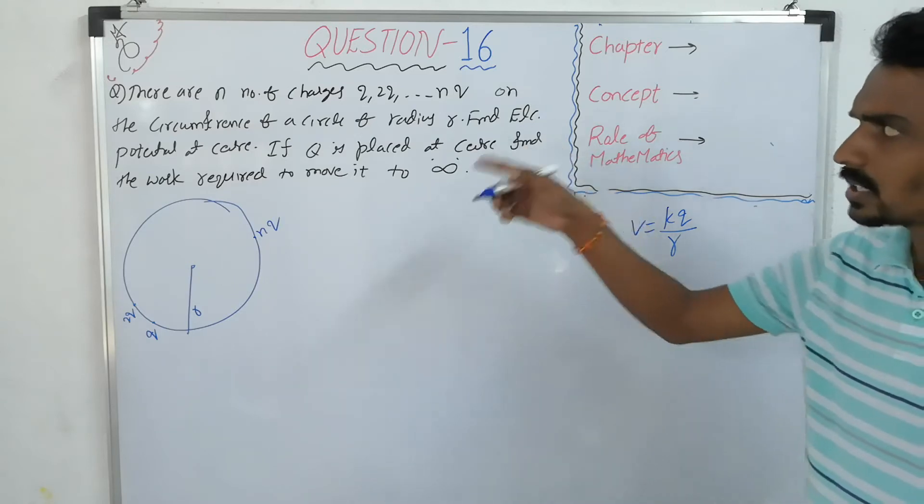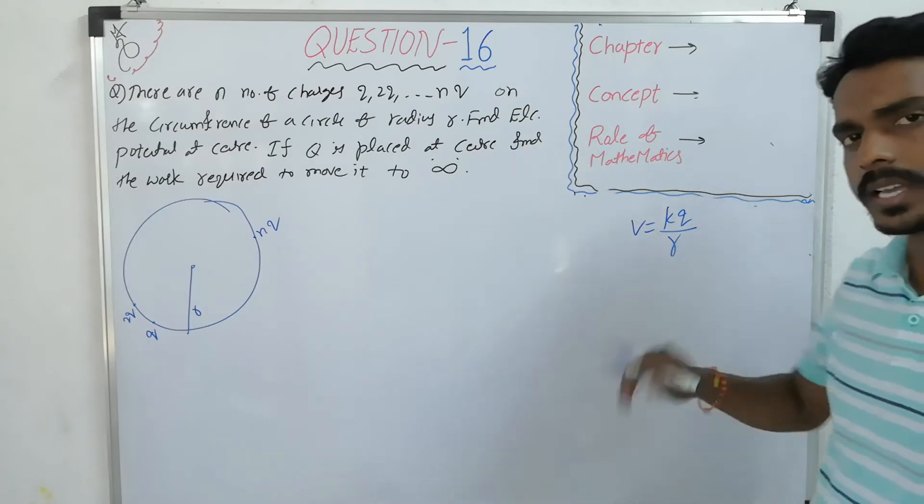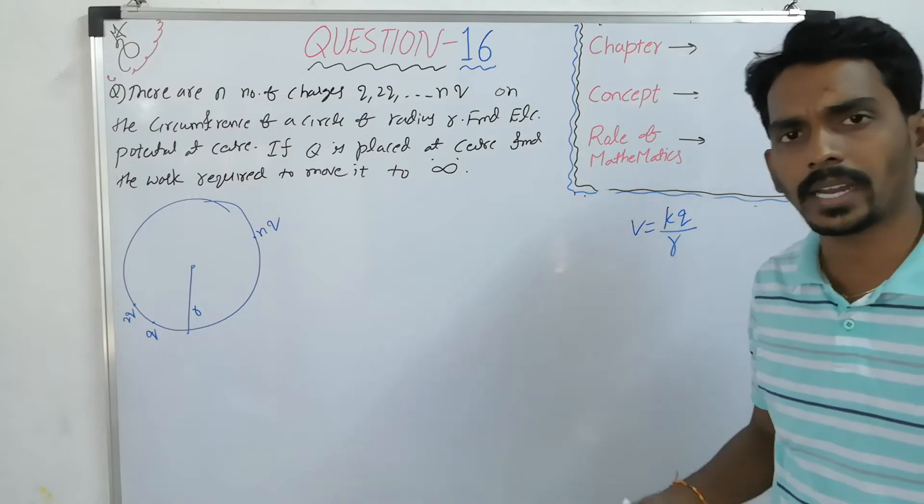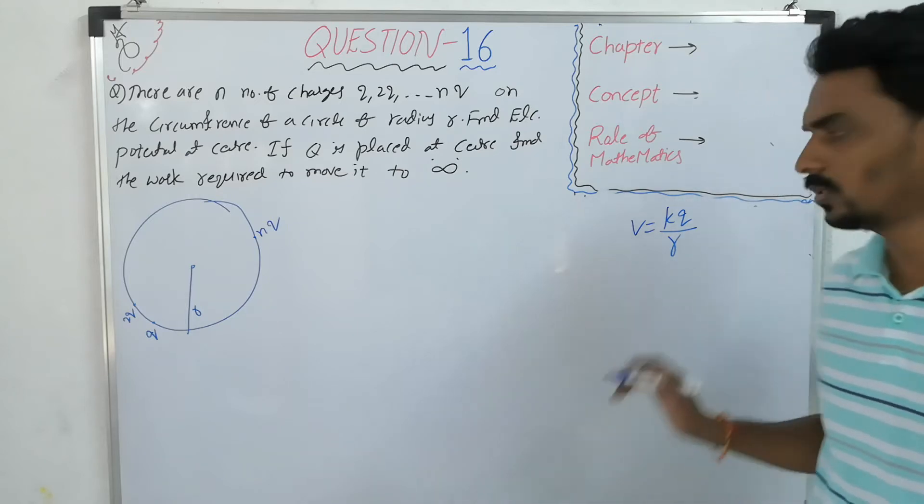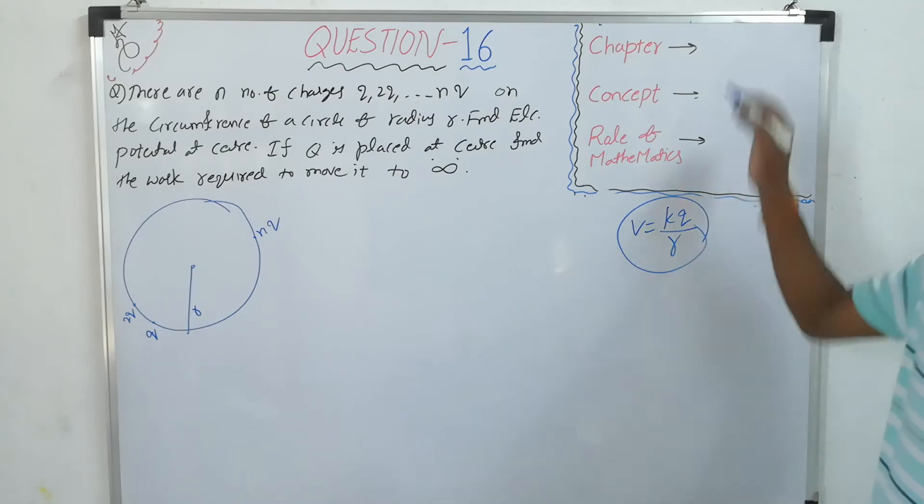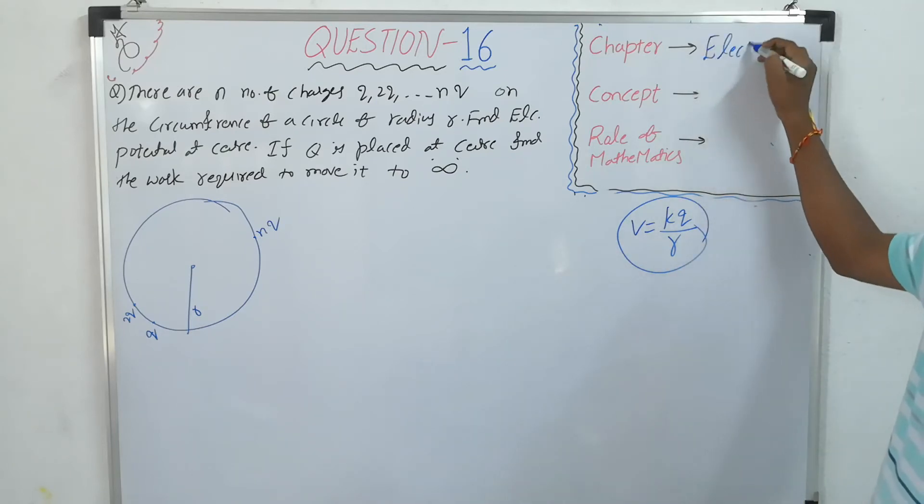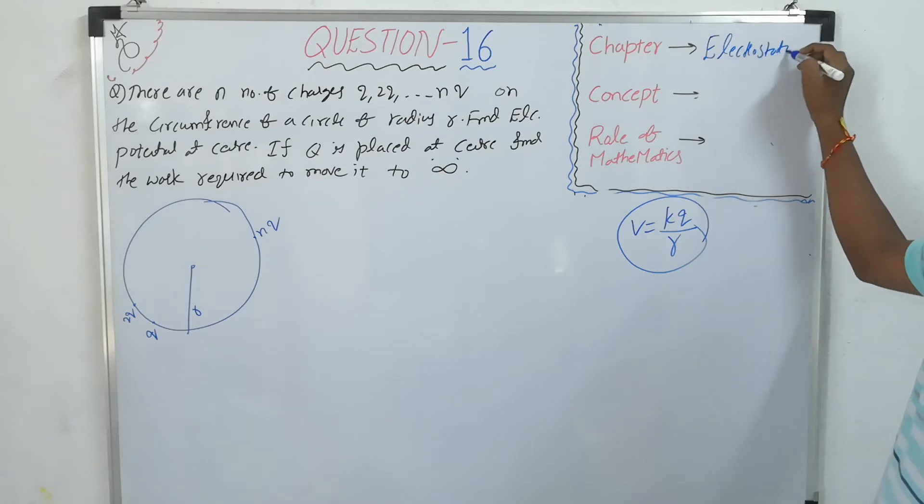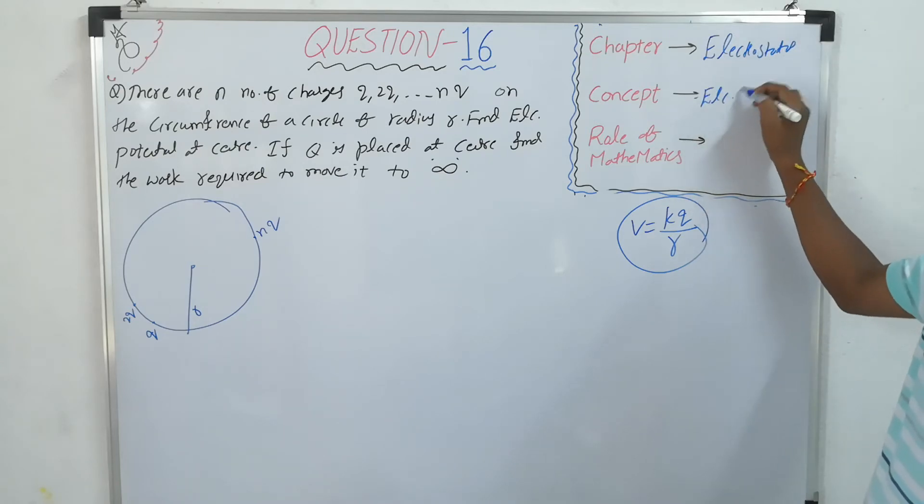So all charges are positive, so all the potentials are positive. If there is any negative charge, then the potential is negative. This is the one single physics formula. It is related to which chapter? Electrostatics. What is the concept? Electric potential.